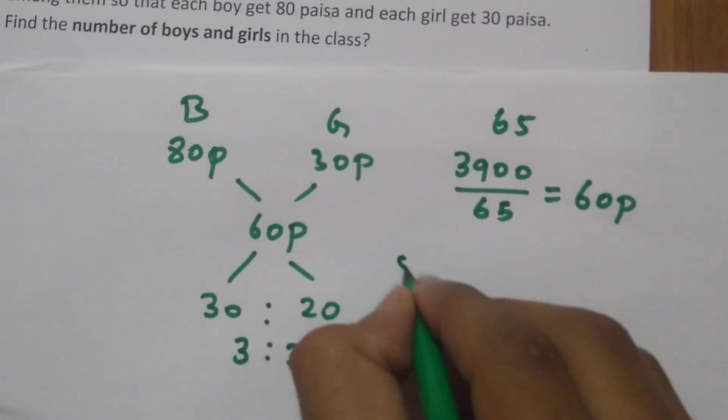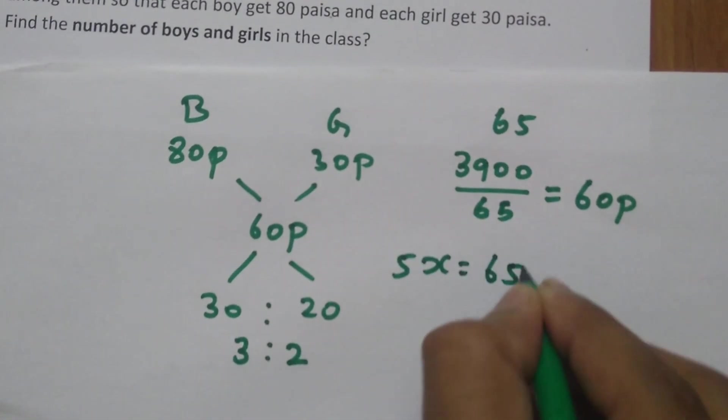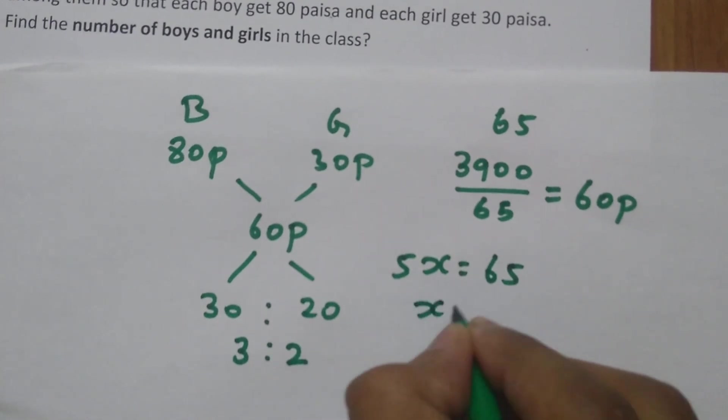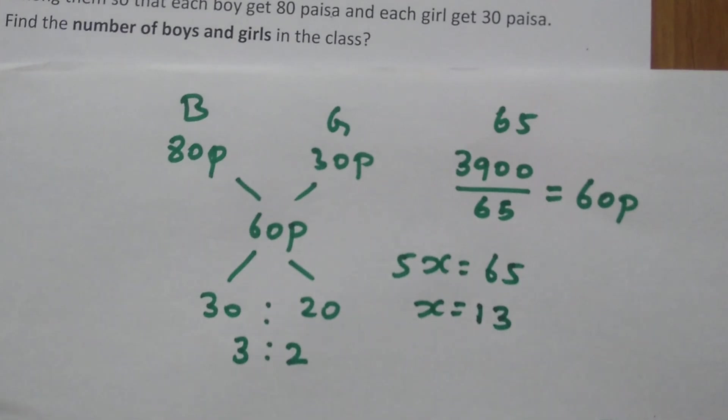So totally how many parts? 5 parts. This 5 parts is 65 students. If 5 parts is 65 students, 1 part is 13 students.